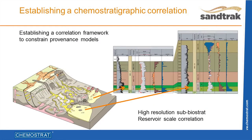The first step in any SandTrack study is to construct a stratigraphic framework using high-resolution chemostratigraphy, wireline, and biostratigraphic data — if available — in order to constrain subsequent provenance mapping.